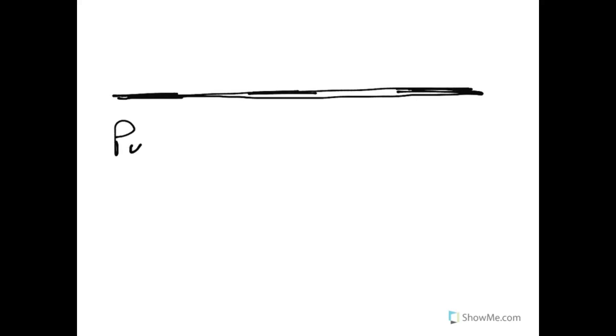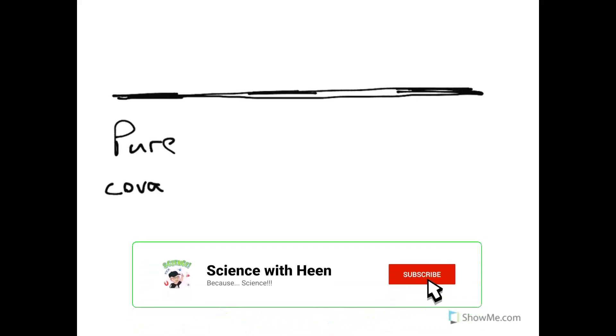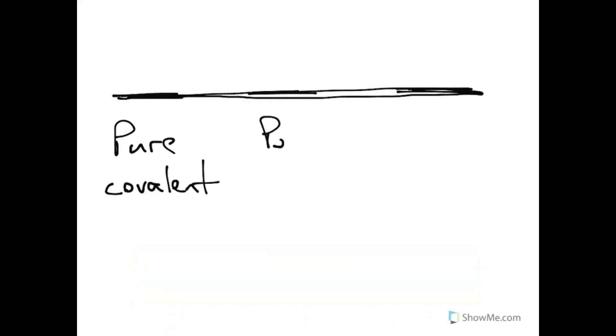We have pure covalent, this is when the atoms have the same electronegativity. When there is a slight difference, we have polar covalent. This is when there is still a sharing of electrons, but it's an unequal sharing. And when the sharing is so biased towards one atom, then we have ionic bonds.